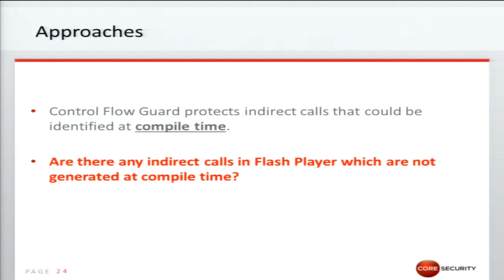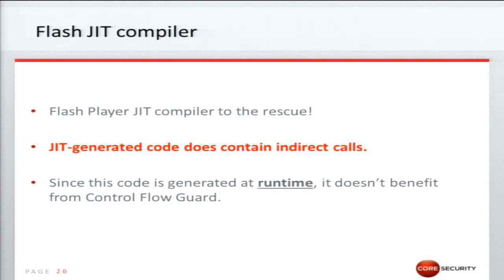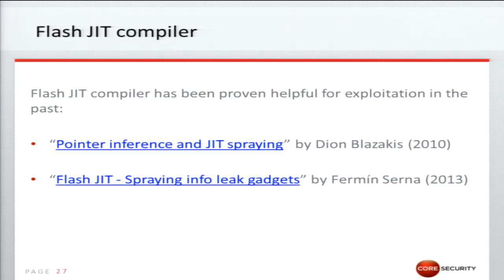CFG protects indirect calls that could be identified at compile time. So the question is: are there any indirect calls in Flash Player not generated at compile time? The answer is yes. The code generated by the just-in-time compiler of Flash does contain indirect calls, and since this code is generated at runtime, it is not protected by CFG. As a historical note, the Flash JIT compiler has been useful for exploitation before — see 'Pointer Inference and Just-In-Time Spraying' by Dion Blazakis, and 'Flash Just-In-Time Spraying Info-Leak Gadgets' by Fermin Serna.